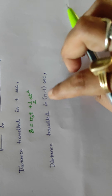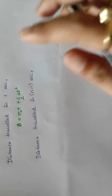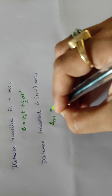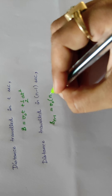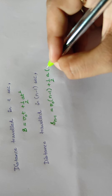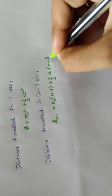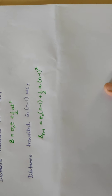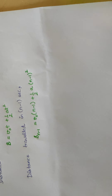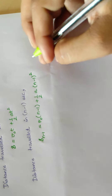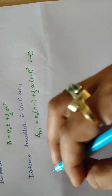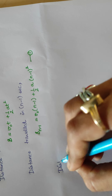To find the distance travelled in n minus 1 seconds, we replace T with n minus 1 in the equation. So S(n-1) equals v₀ times (n minus 1) plus one-half A times (n minus 1) whole squared. This is the expression for distance travelled by the body in n minus 1 seconds. Let us mark this as equation 1.